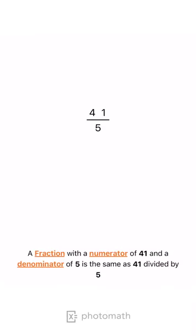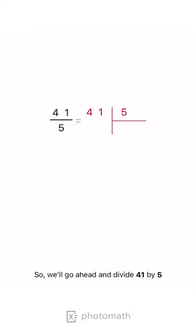A fraction with a numerator of 41 and a denominator of 5 is the same as 41 divided by 5. So, we'll go ahead and divide 41 by 5.